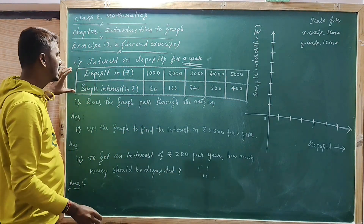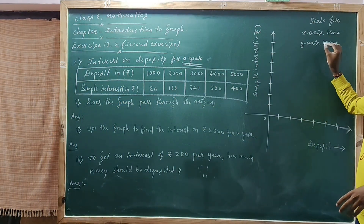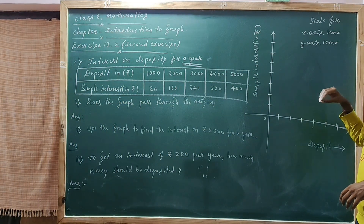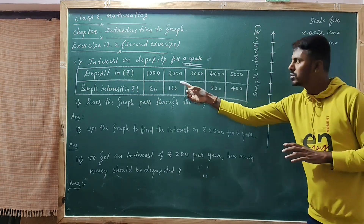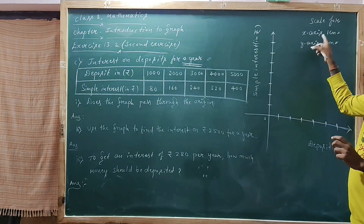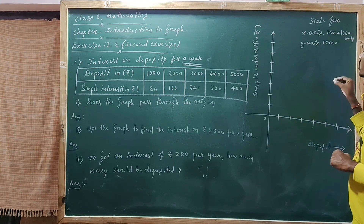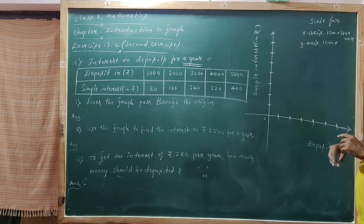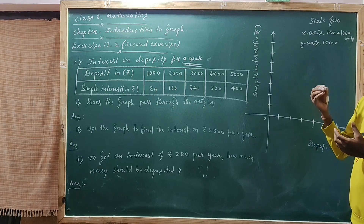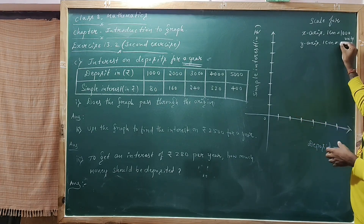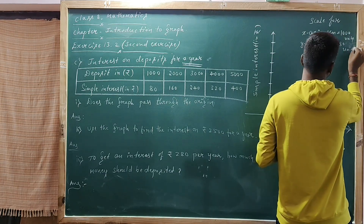Represent this data on the graph paper. Draw x-axis and y-axis and choose suitable scales. For x-axis: 1 cm equals 1000 units. For y-axis: 1 cm equals 80 units — so the values go 80, 160, 240, 320, 400, 480. Mark the deposits on the x-axis: 1000, 2000, 3000, 4000, 5000.